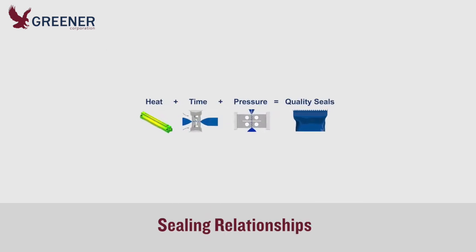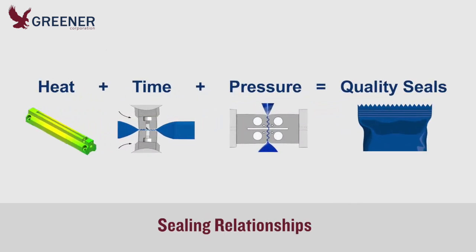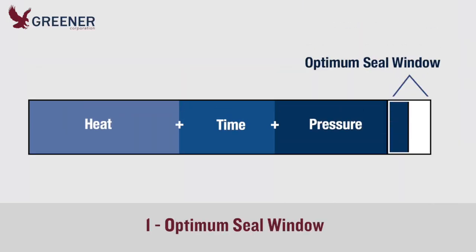The following four graphs demonstrate the relationships between heat, time, and pressure, which often go unrecognized when adjustments are made and cause seal problems. Depending on your specific film, package configuration, and running conditions, heat, time, and pressure will each have their own optimal range of levels. But their total sum, as shown on graph one, must fall within the optimal sealing window. Since these sealing elements work together, adjustments to one must consider the effect on the others to remain within this window.